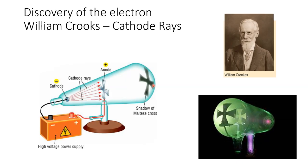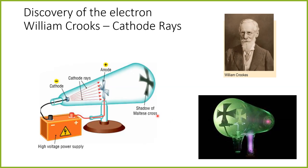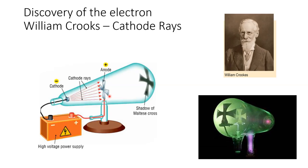Crookes noticed that cathode rays caused the glass to fluoresce with a green color when they struck it, and that they were stopped by the metallic Maltese cross, producing a shadow effect at the end of the tube. In modern terms, we know what's happening: the positively charged anode pulls electrons out of the atoms that make up the cathode, and those electrons move through the air towards the positive charge in straight lines — some strike the glass at the back, others are absorbed by the anode.